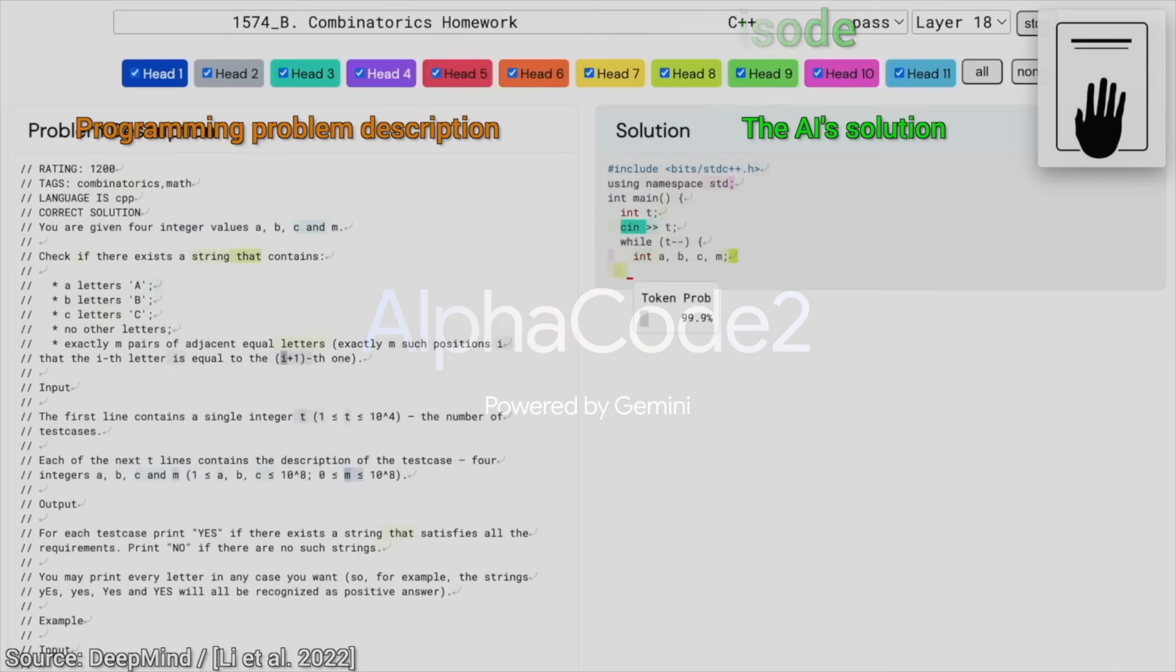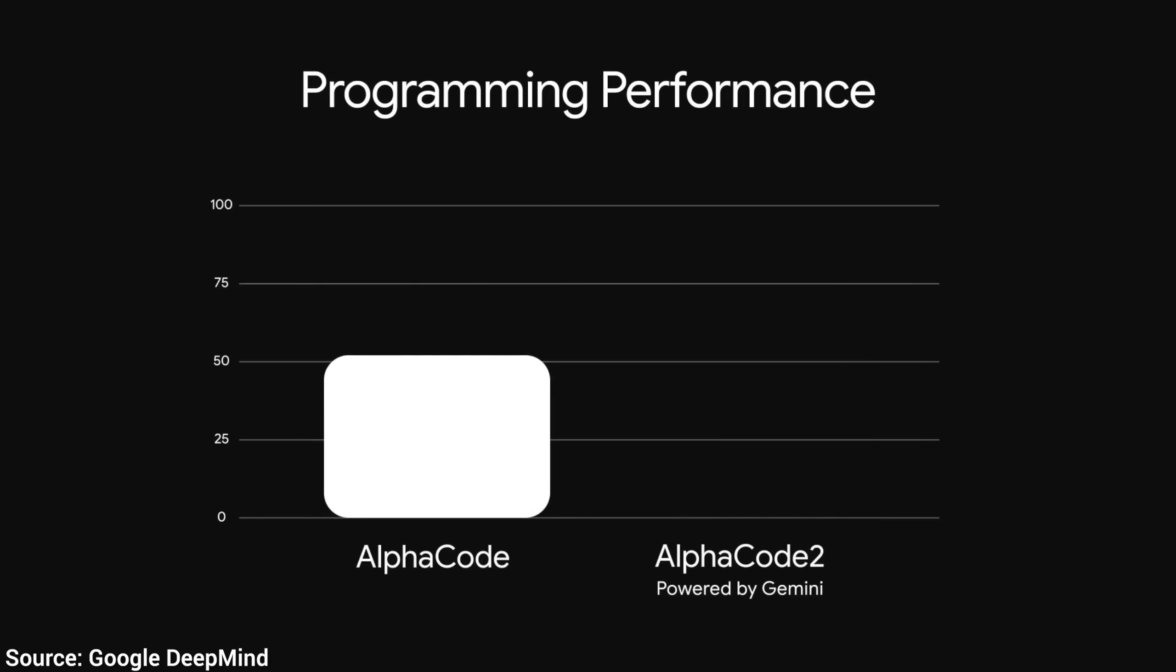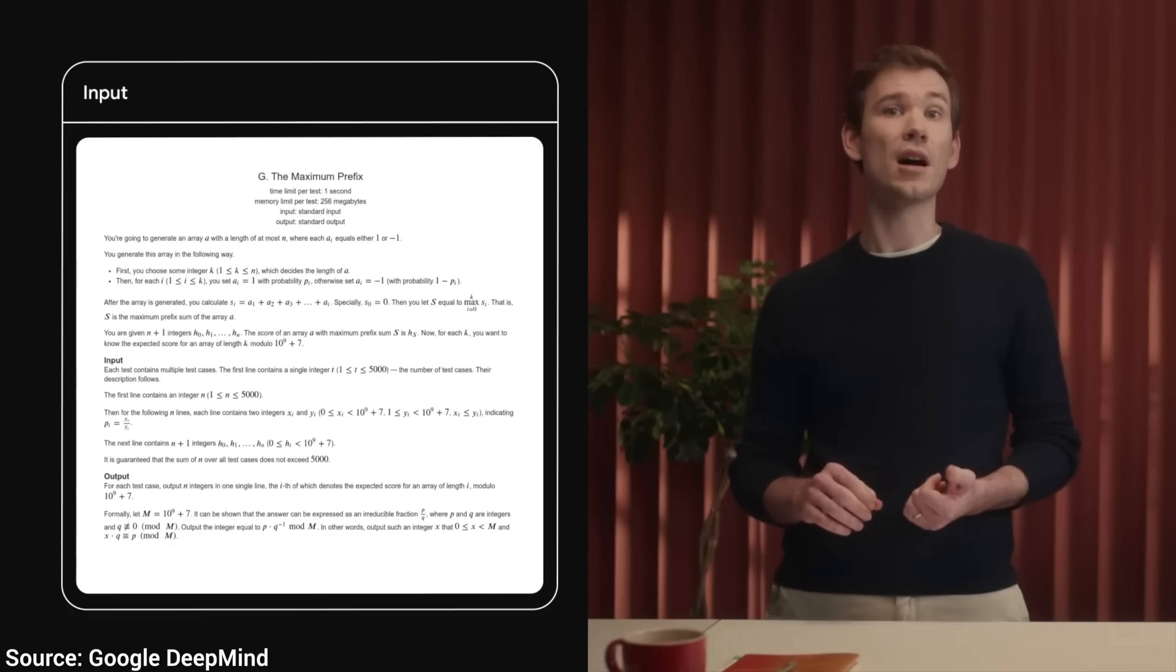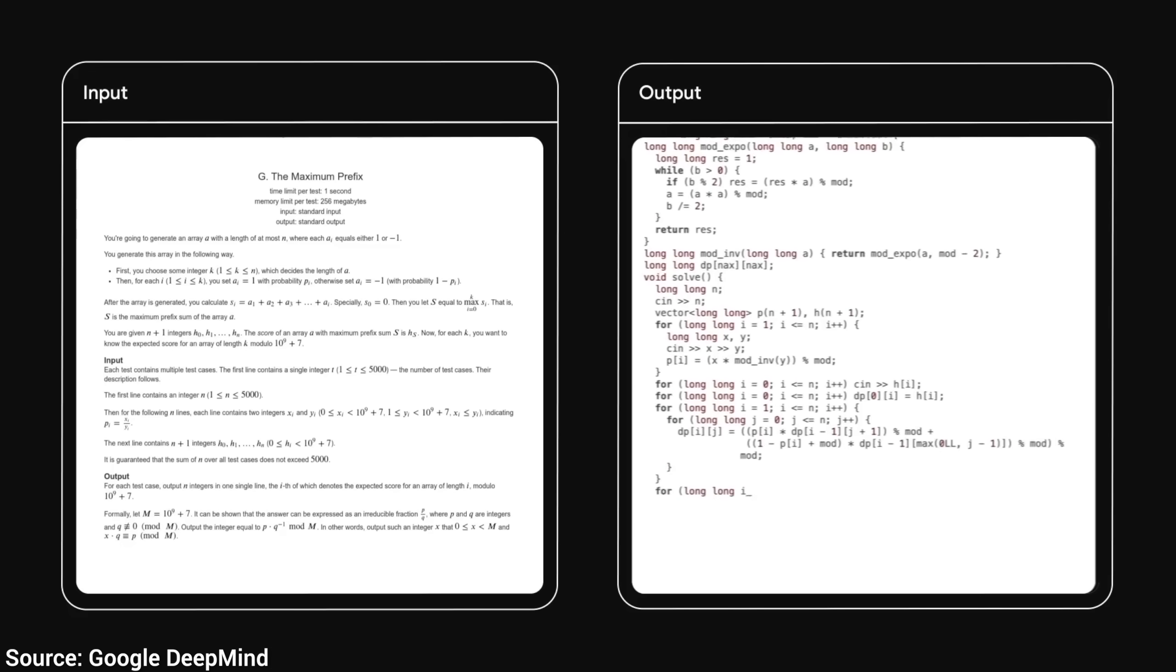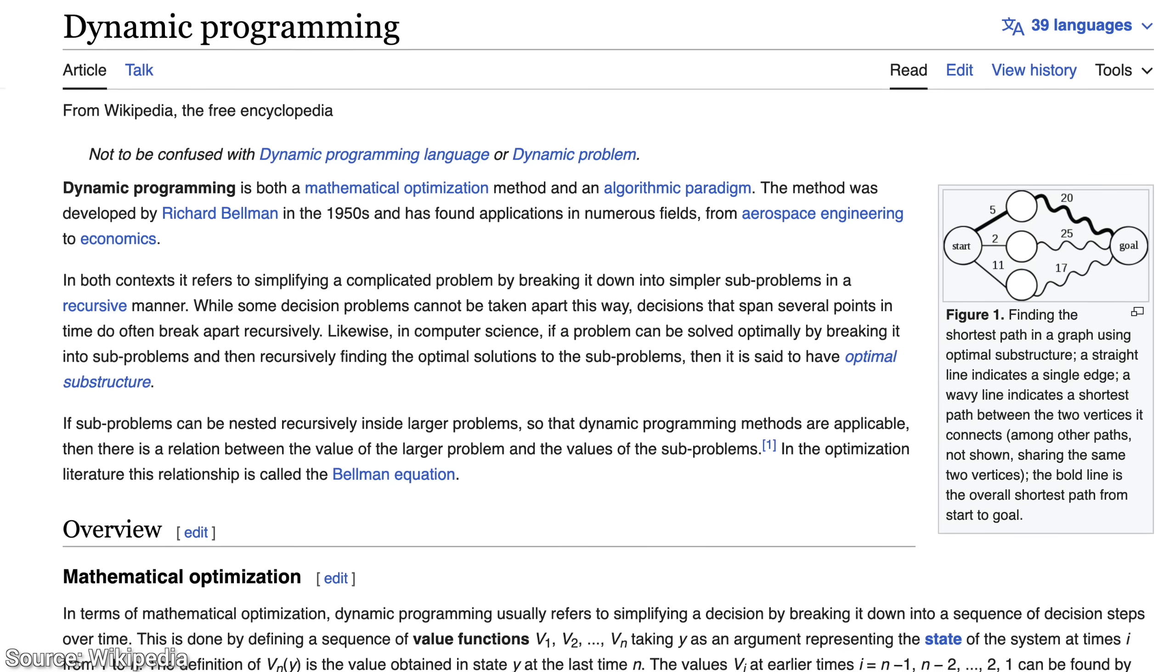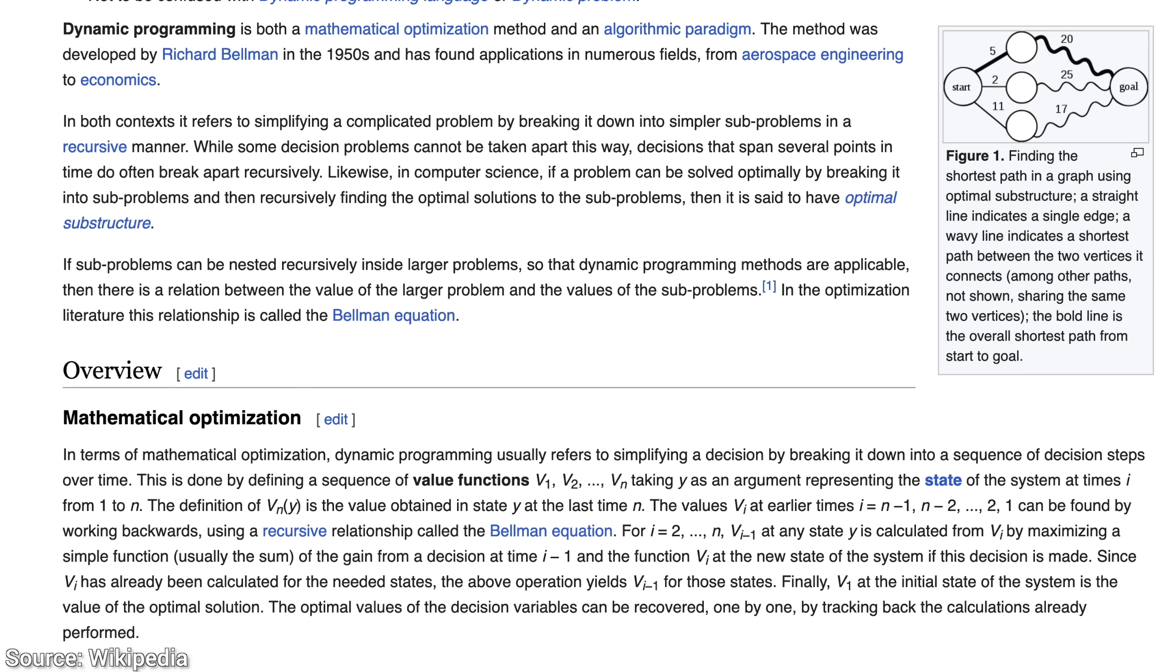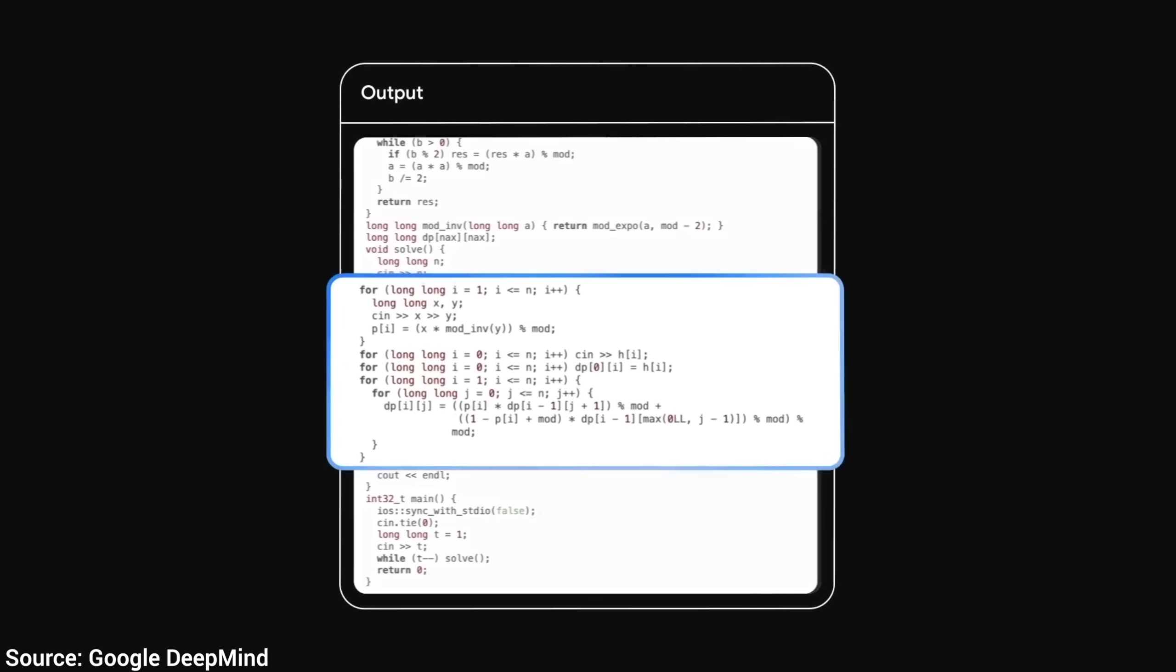And AlphaCode 2 is also here. The first version was roughly as good as half the humans in coding, and now better than 85% of the human competitors. And all this in just one version change. So, what can it do? Well, it can break down a written task and come up with efficient solutions. Here, it came up with a solution using dynamic programming. This is a college-level computer science algorithm that breaks down a big, difficult problem into smaller, easier problems. Such a short, elegant solution.